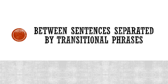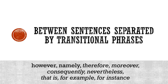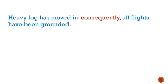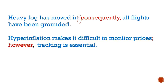Another use of the semicolon is between sentences separated by a transitional phrase, such as however, namely, therefore, and many others. For example: 'Heavy fog has moved in; consequently, all flights have been grounded.' We have two independent clauses separated by the transition word 'consequently,' with a semicolon after the first sentence. The same is true for: 'Hyperinflation makes it difficult to monitor prices; however, tracking is essential.' Notice that the transition word is followed by a comma.